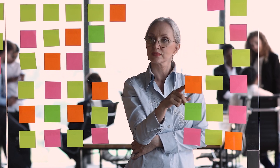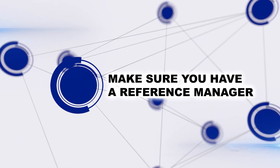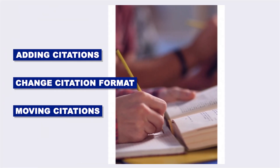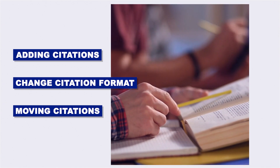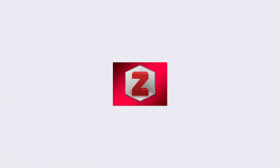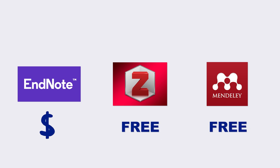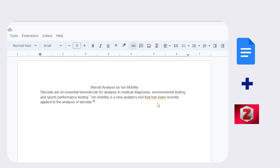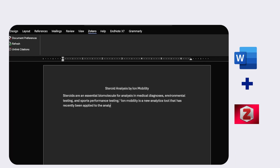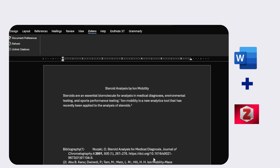Before you start actually writing your research article, make sure you have a reference manager. Spending time manually adding citations, changing citation formats, or editing your bibliography takes far more time than using a reference manager. I recommend Zotero — it's free — but there are also paid options like EndNote and other free ones like Mendeley. Almost all of them have plugins for Google Docs and Word, so you can write and cite simultaneously. This is one of the key technology pieces that can make writing your research article a lot faster.